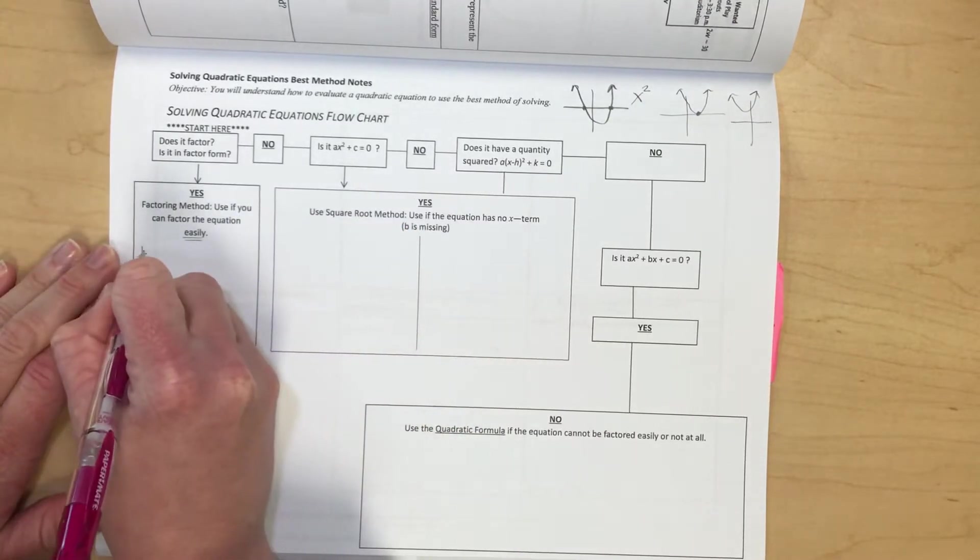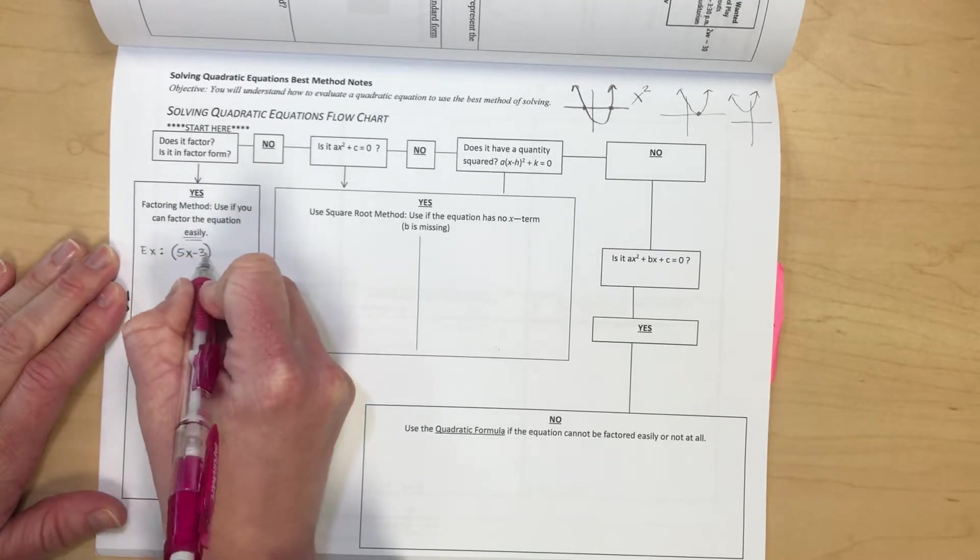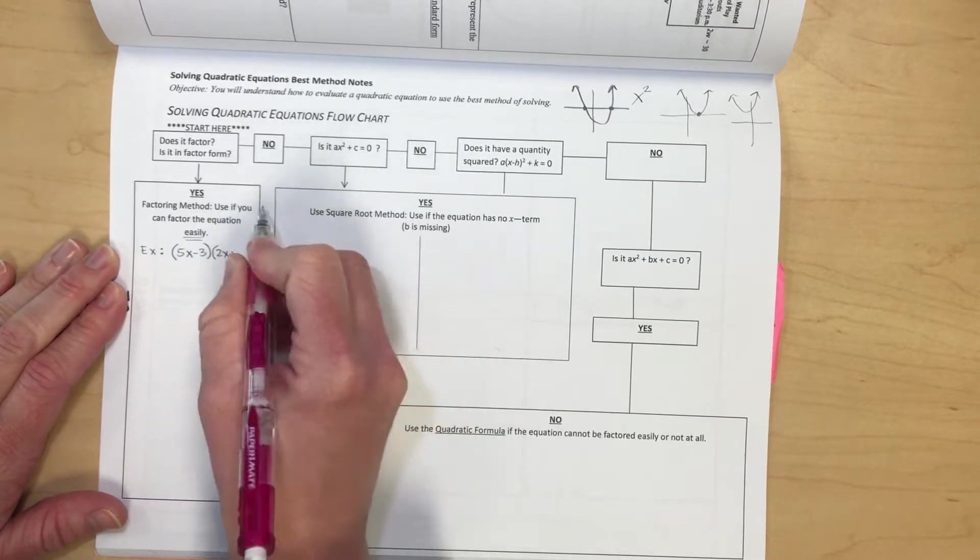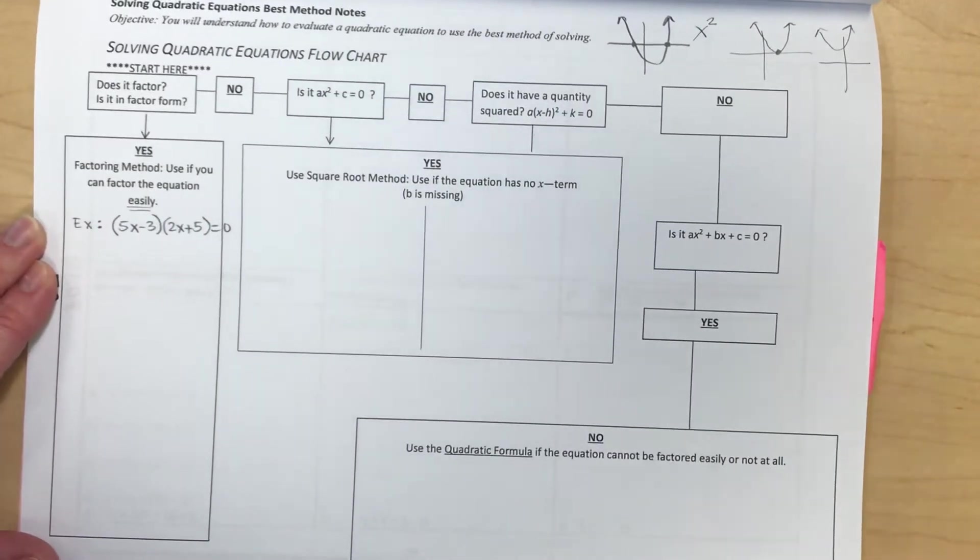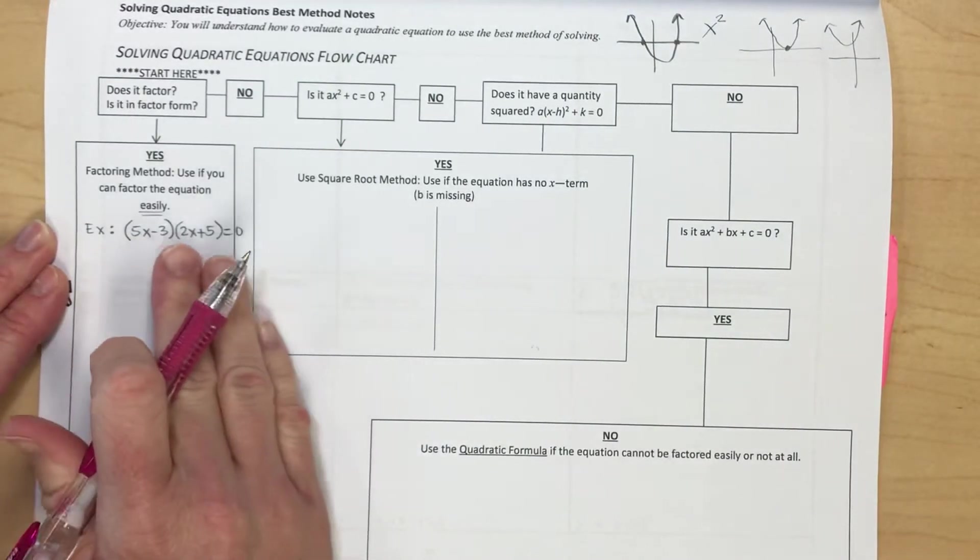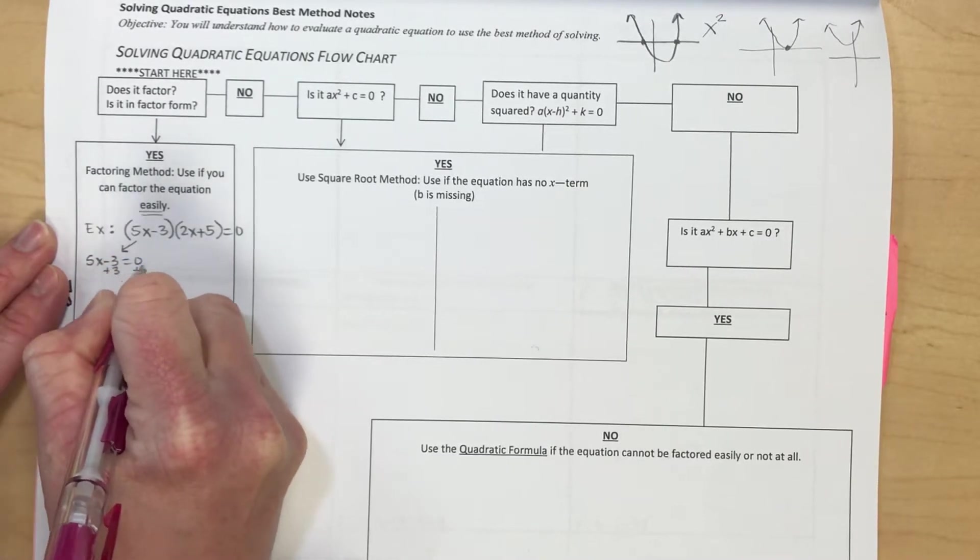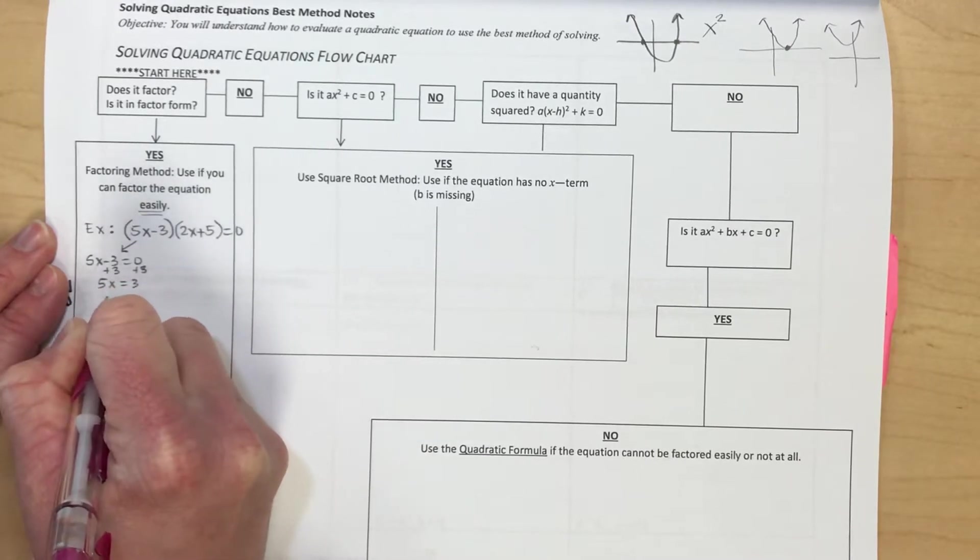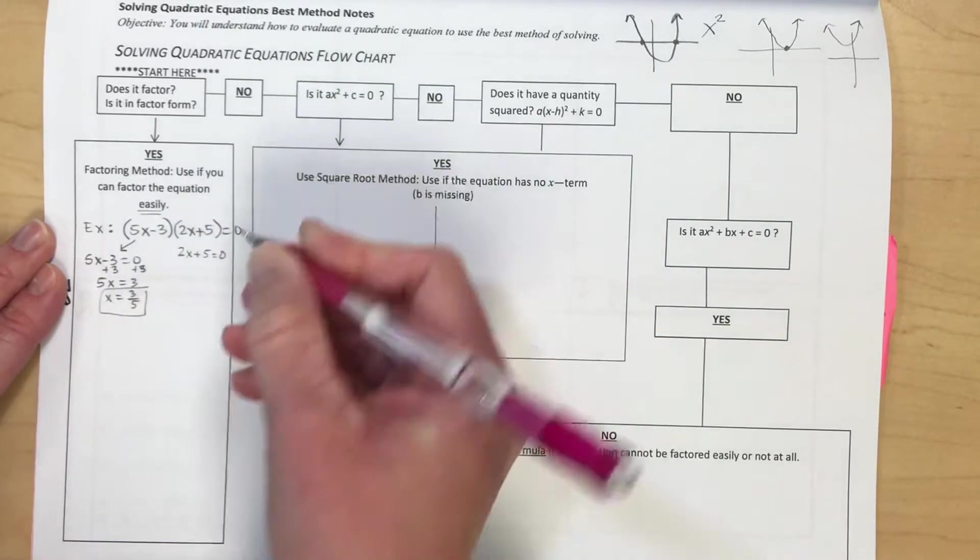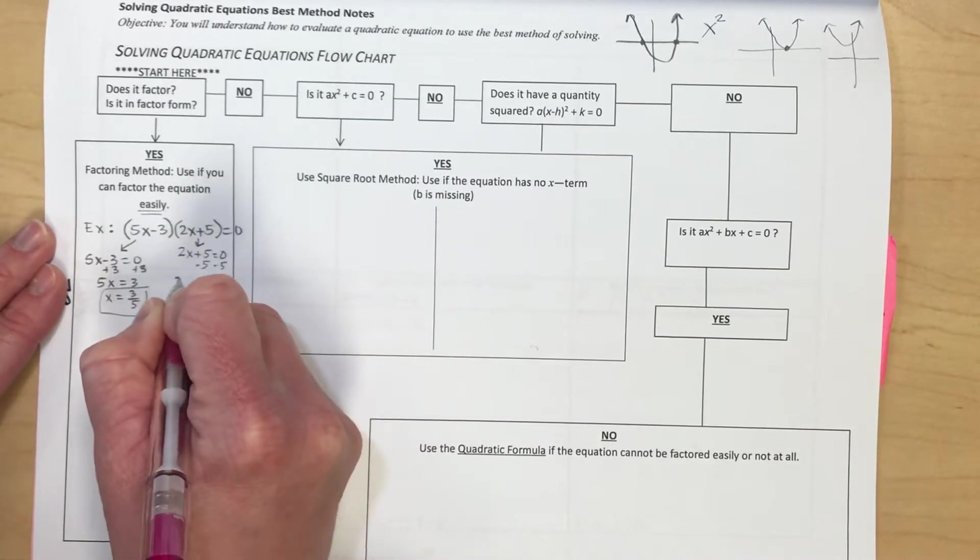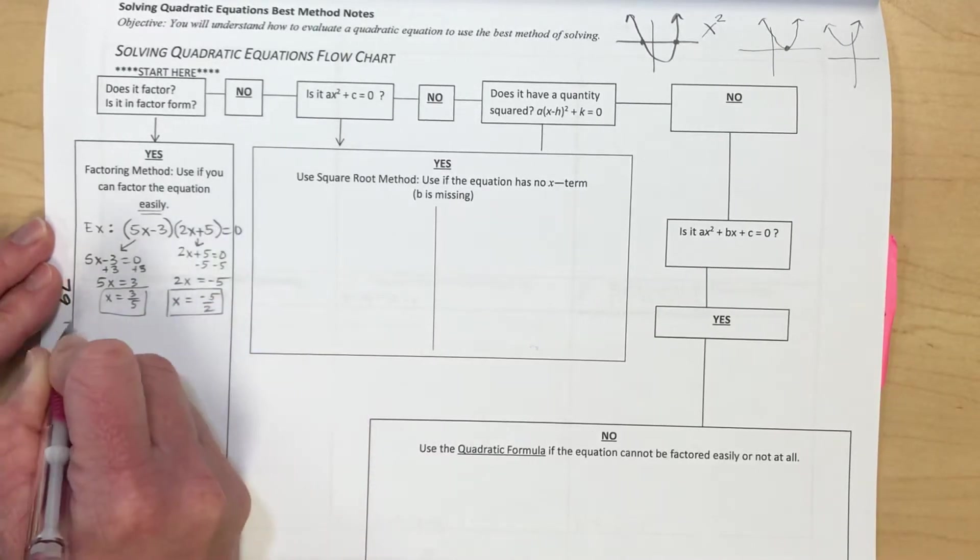Factoring method: use if you can factor the equation easily, or if it's actually already done for you. Here's an example of one that is already factored for you: (5x - 3)(2x + 5). If this is what you start with, two factors in a set of parentheses, then that means you would do factored form. Just set each factor equal to 0. So 5x - 3 = 0, add 3 to both sides, then divide by 5, and you get 3/5 for your first solution. And then 2x + 5 = 0, subtract 5 over, divide both sides by 2, we'll have negative 5 divided by 2 for our second solution.